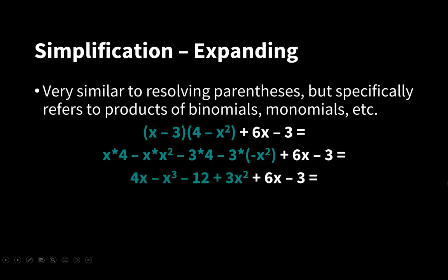Then we get 4x - x³ - 12 + 3x² and then the rest + 6x - 3. Then we continue to reorganize the polynomial and combine like terms if needed.